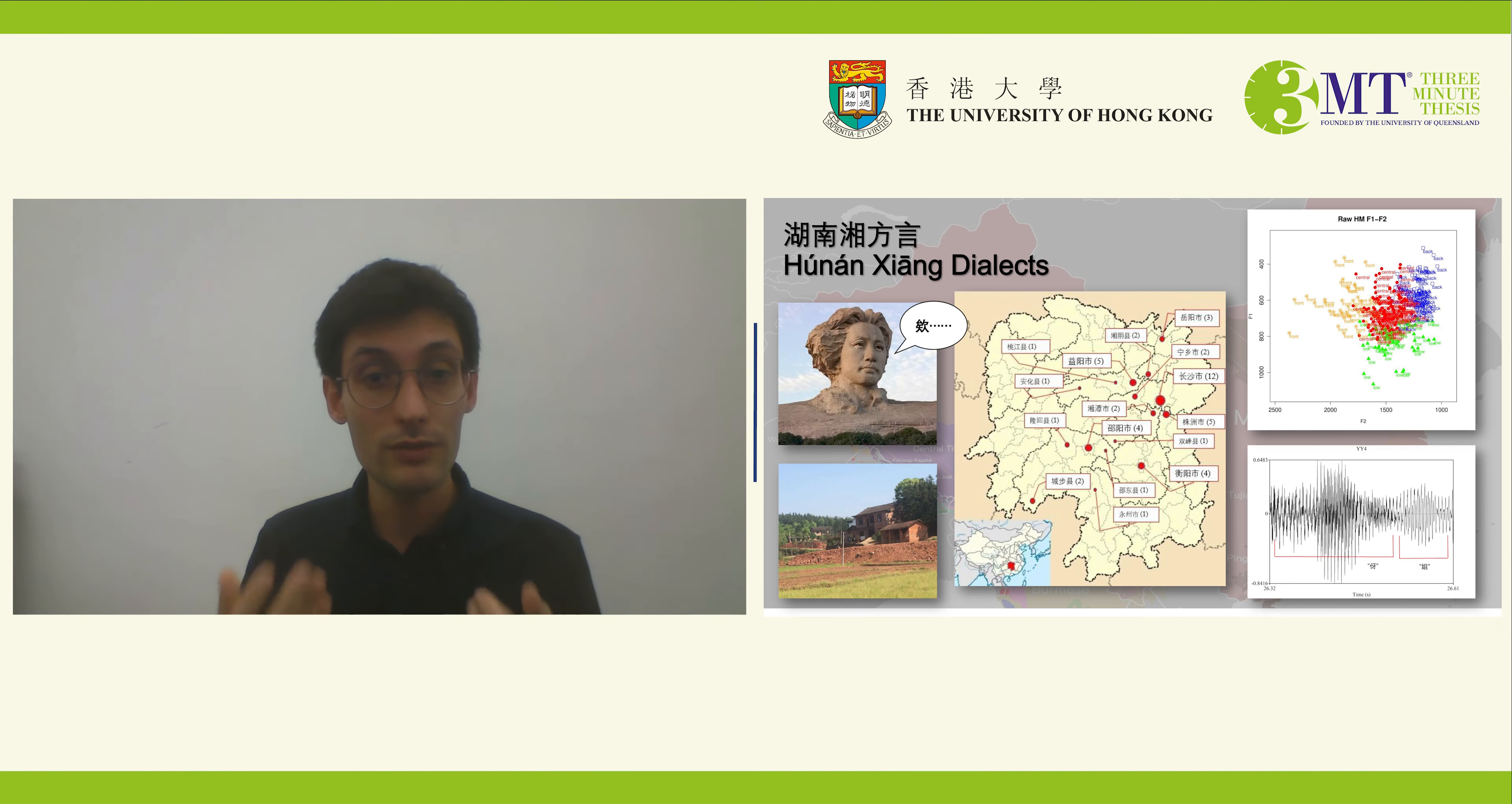These findings confirm previous views on the transitionality of Xiang, on how its geographic location midway between the north and south is also reflected in its linguistic structure.